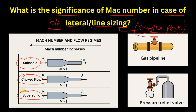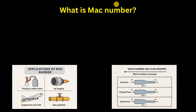When we do the outlet lateral sizing for a PSV — whether the outlet goes to atmosphere or to a flare — if the PSV is handling vapor or gas service, the Mach number plays a very important role. We will now discuss why.